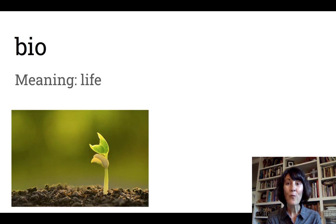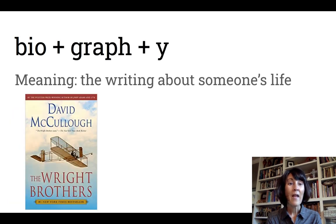Now let's add it with the root you already know. If I add bio with graph, I'm going to get biography, and it means writing about someone's life. And so here's one of my favorite books by David McCullough. He wrote about the life of the Wright brothers, the first people to invent the airplane.